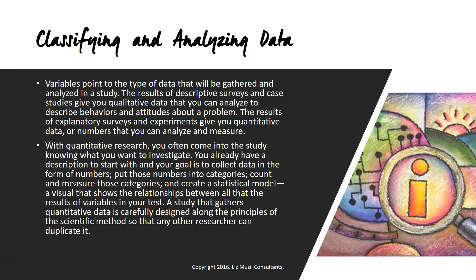With quantitative research, you often come into the study already knowing what you want to investigate. Your goal is to collect data in the form of numbers, put those numbers into categories, and then count and measure those categories to create a statistical model — a visual that shows the relationship between all the results of the variables in your test. A study that gathers quantitative data is carefully designed along the principles of the scientific method so that any other researcher can duplicate it. Remember the different types of variables — nominal, ordinal, and interval — used in surveys from earlier in this lesson; this is where you start to calculate them.